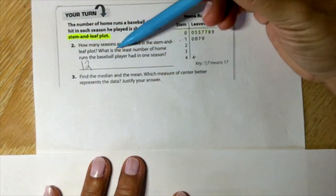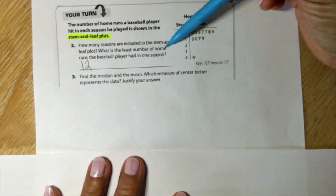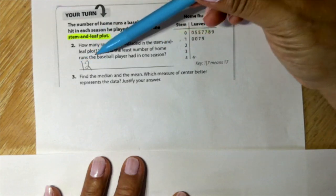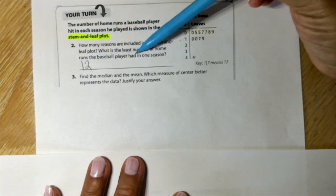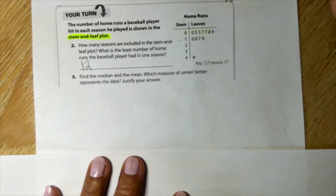What is the least number of home runs the baseball player had in one season? Zero, the least, right here.